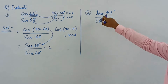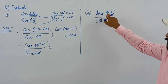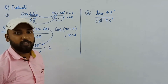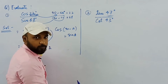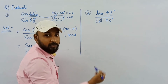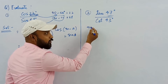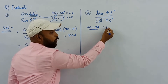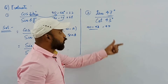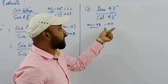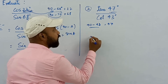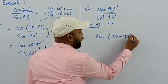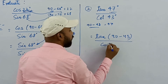To make this better understood, consider tan 47 divided by cot 43. Think in terms of 90 minus: 90 minus 43 equals 47. So in place of 47, we can write 90 minus 43, giving us tan(90 − 43) divided by cot 43.